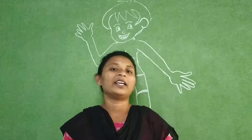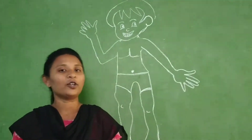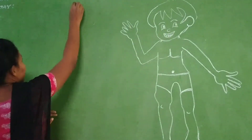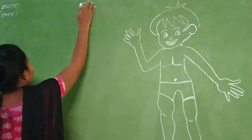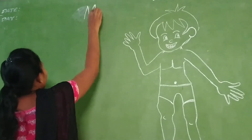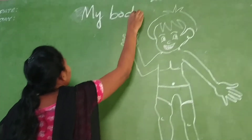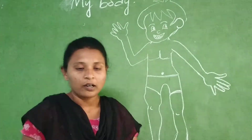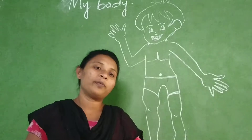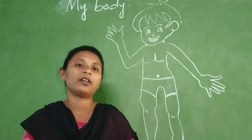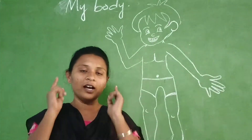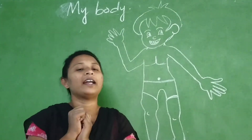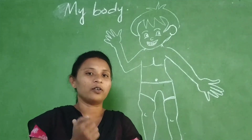Today we are going to learn a new topic — that is 'My Body.' What is your lesson name, children? My body. So children, how many body parts are there in your body? So many — hands, legs, eyes, ears, nose, mouth. Today I will explain to you each one.